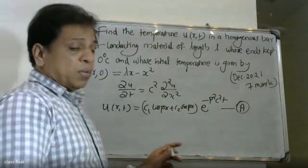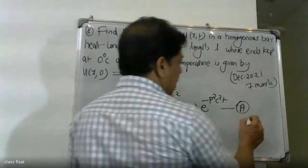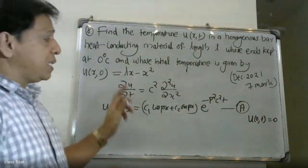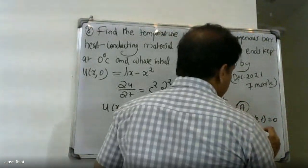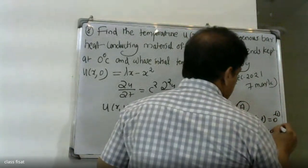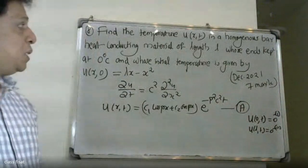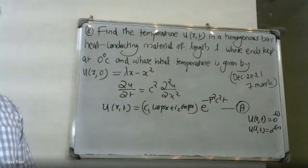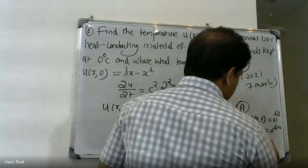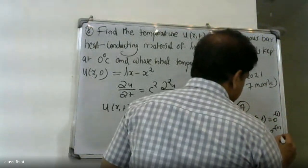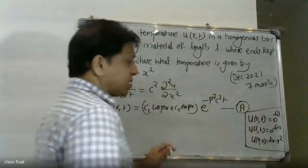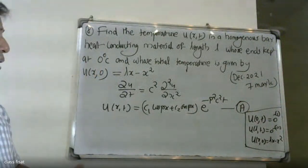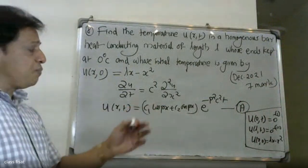The boundary conditions are: u(0,t) = 0, u(L,t) = 0, and u(x,0) = Lx − x². These three conditions will be applied one by one. This is condition one.